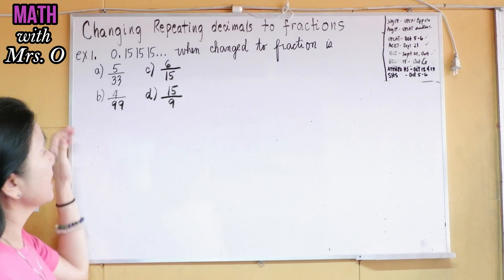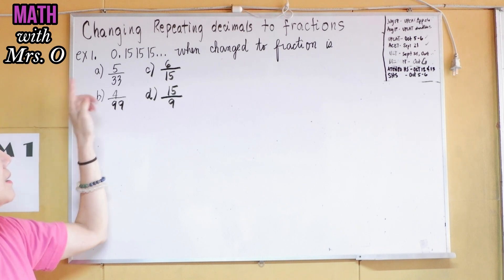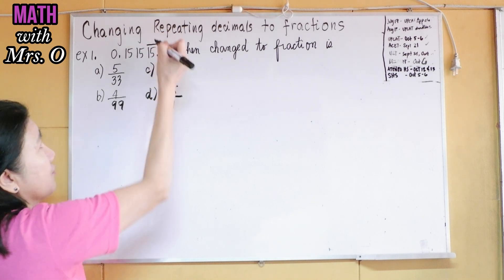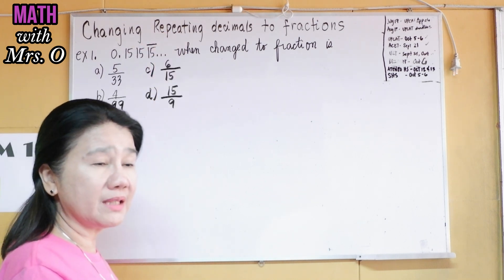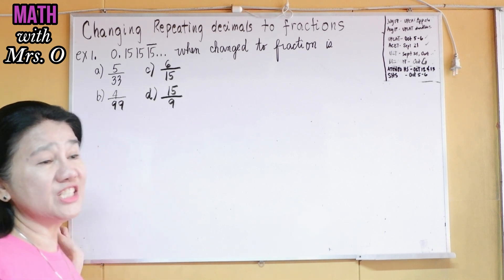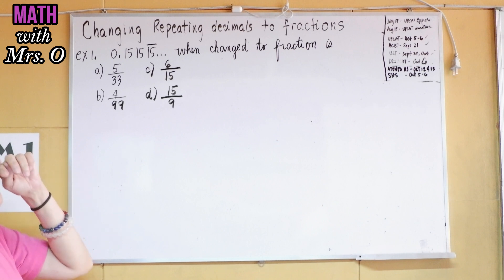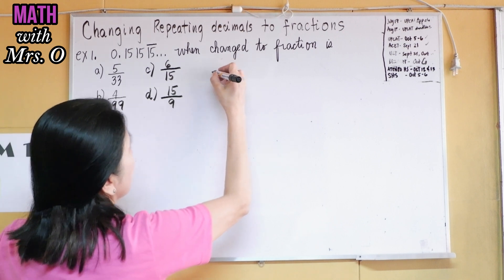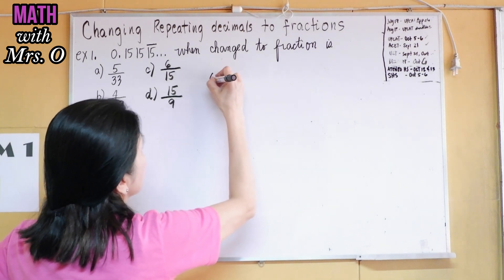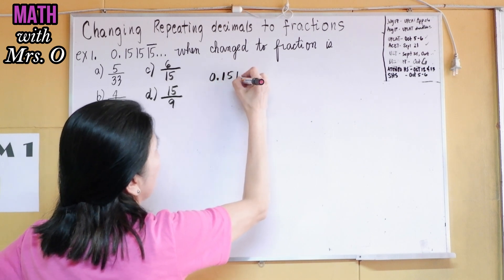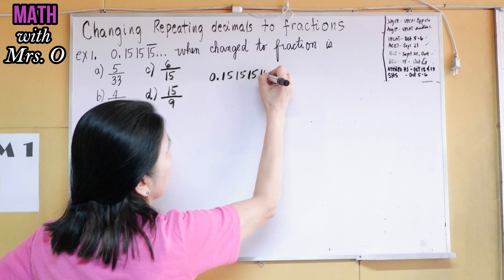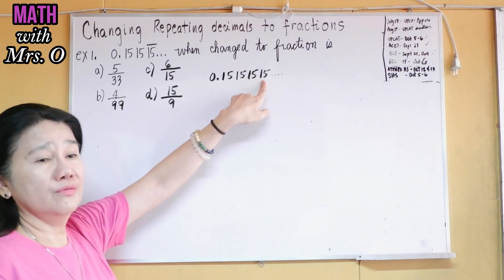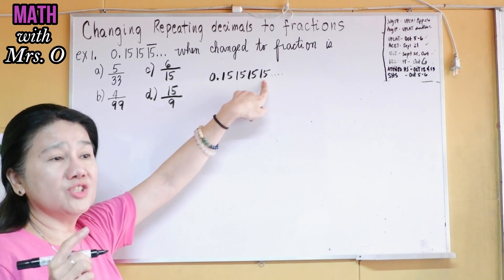So we have here example number one: 0.151515. Sometimes you see a bar on top of 15, which means two digits are repeated. So 0.151515 means 0.1515151515 and so on and so forth. The two digits, 1 and 5 — or 15 — are repeated.